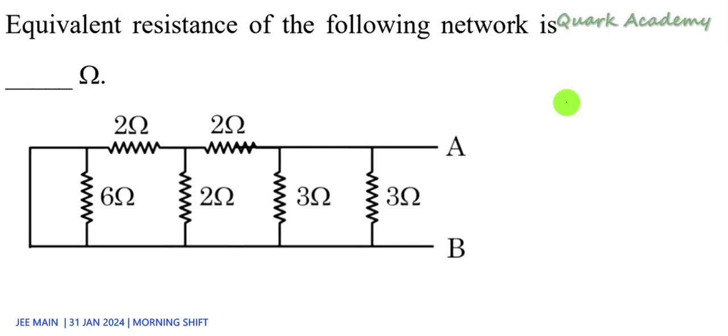In this question we need to figure out the equivalent resistance. The resistance network is given. If you look at this carefully, you will know that this 6 ohm is short-circuited because both the sides are connected to the same point by a wire, which means the 6 ohm is not going to play any role. We can simply remove it and redraw this circuit.